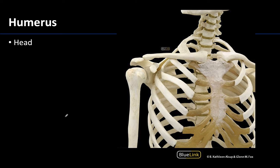The humerus articulates with the scapula at the head of the humerus, which is the ball of the ball-and-socket joint that is the shoulder joint — here's the socket of the scapula. The head always points medially when you're trying to get oriented, heading in the direction of the thorax.